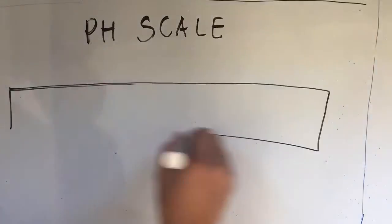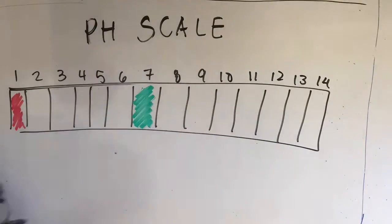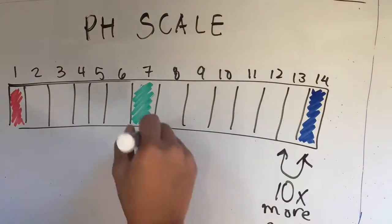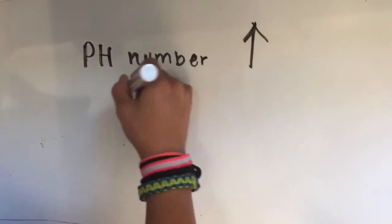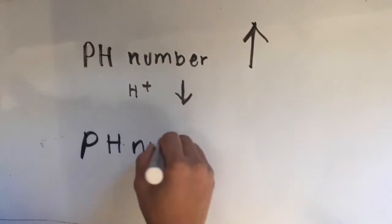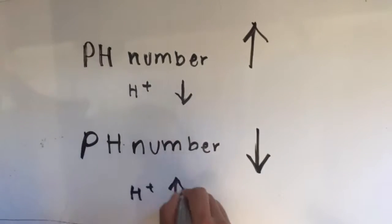To give you an idea of what the numbers mean, each whole value below a number is 10 times more acidic than the next number higher. If the pH number increases, the number of hydrogen ions in the substance decreases, and when the pH number decreases, the number of hydrogen ions in the substance increases.